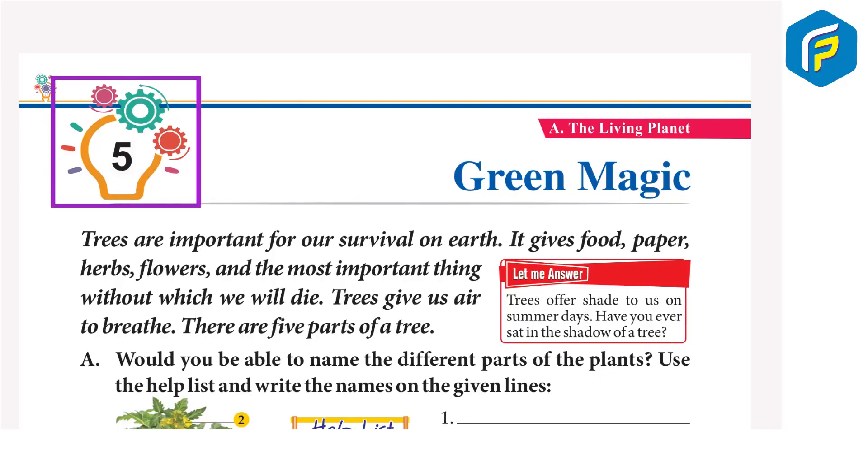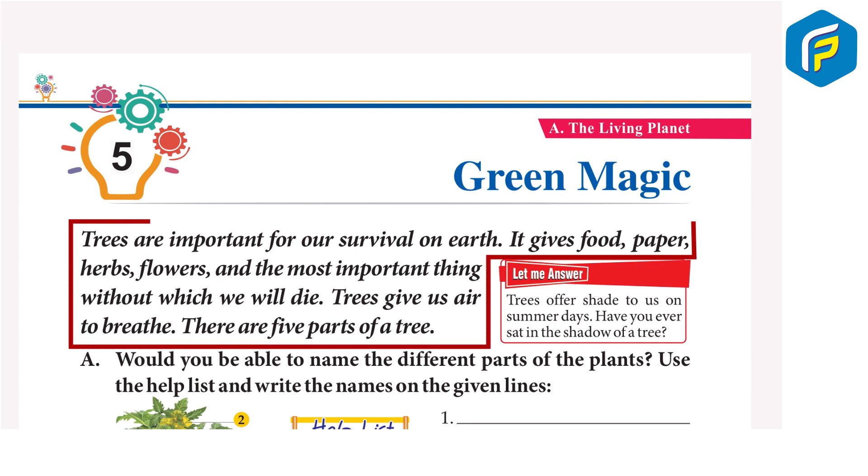Chapter 5: Green Magic. Trees are important for our survival on Earth. They give us food, paper, herbs, flowers, and the most important thing without which we will die - trees give us air to breathe. There are five parts of a tree.